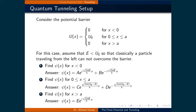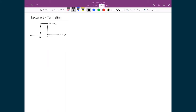Finally, for region 3, there is only one wave function solution — one that represents the particle traveling to the right. There is no solution for a particle traveling to the left in region 3, since that would mean the particle originally came from the right, which isn't true. Therefore, we can ignore that part of the solution. Let's now solve the Schrödinger equation for all three regions and discuss what the solutions represent.